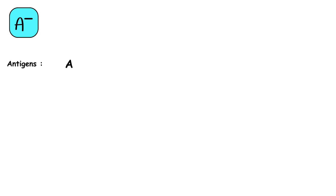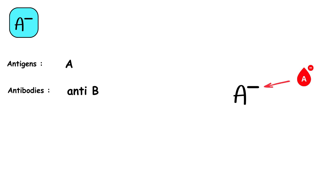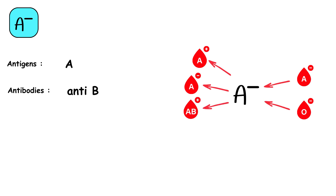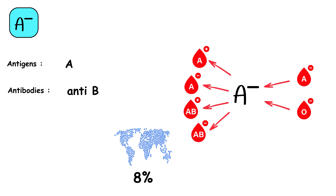A negative blood type features A antigens on the red blood cells but lacks the RH antigen, and has anti-B antibodies in the plasma. Individuals with A negative blood can receive donations from A negative and O negative blood types. They can donate to A positive, A negative, AB positive, and AB negative recipients, making their blood relatively versatile. Around 8% of the global population has A negative blood, which is less common than A positive.